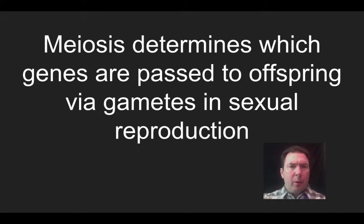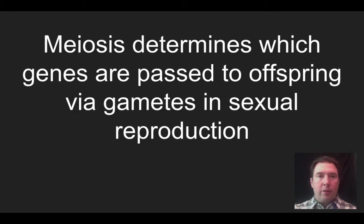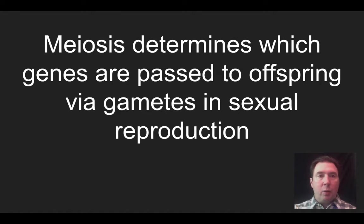We're looking at a typical diploid organism like an animal or a plant. We will also undergo a comparison of mitosis and meiosis, and then lastly I'll talk about the various sources of genetic variation that occur throughout this process. We'll hit some key vocabulary terms when talking about meiosis alone and also when doing the comparison of mitosis and meiosis.